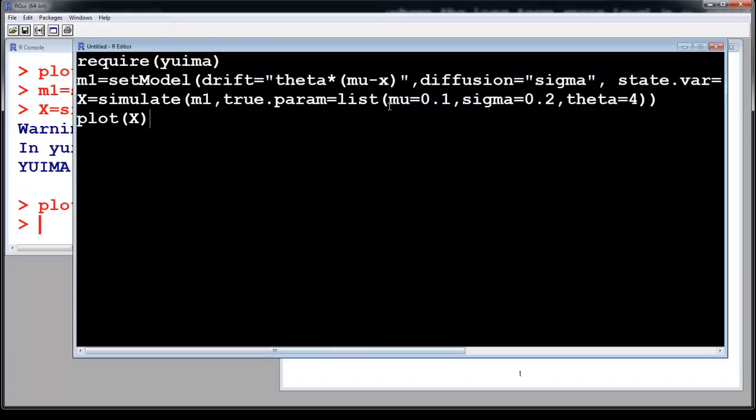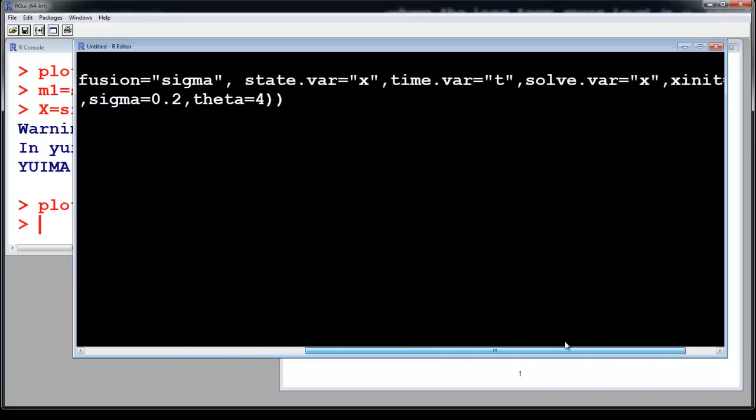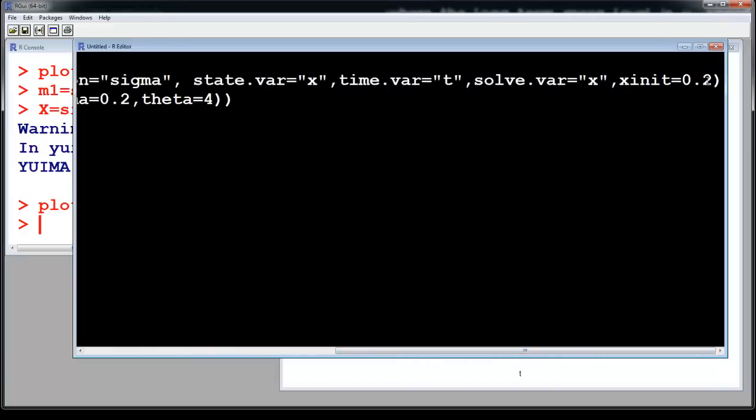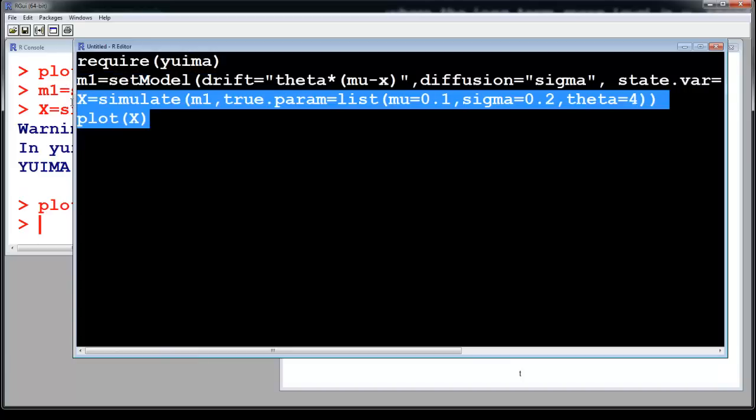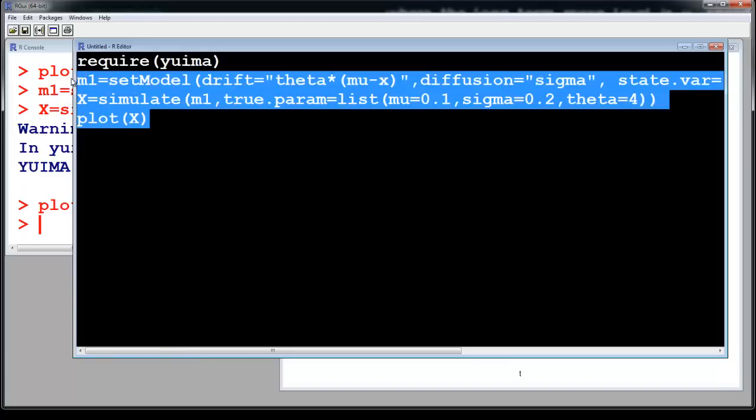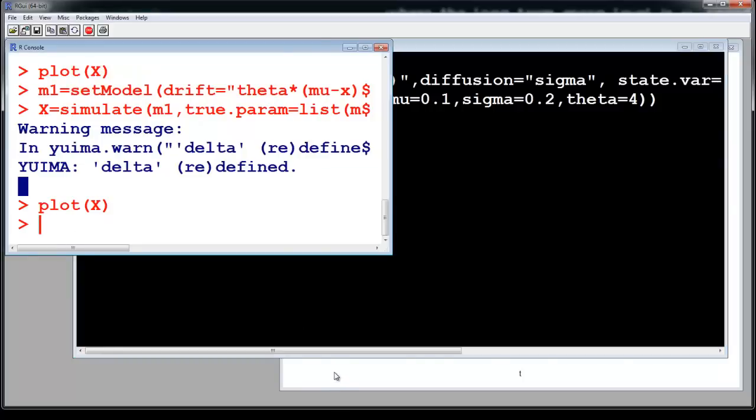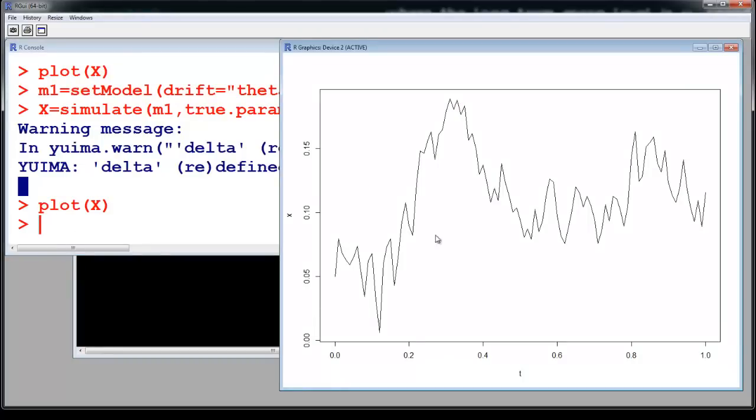So it depends upon what your long term mean is. I'm assuming my long term mean is 0.1 and initial value is 0.2. So you could say your initial value is 0.05 also. So 0.05 and now it is kind of simulating around 0.1. So you can play with these values.